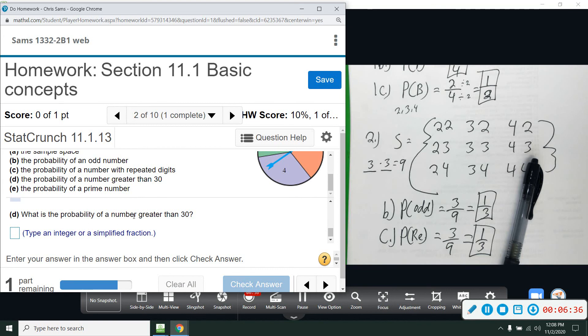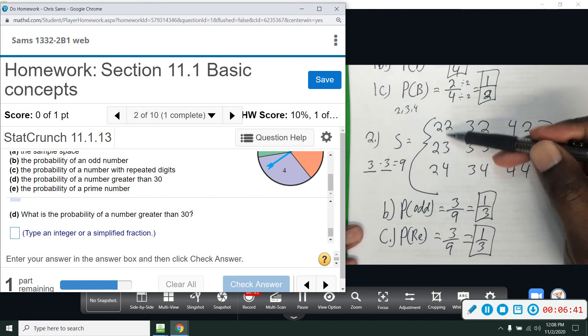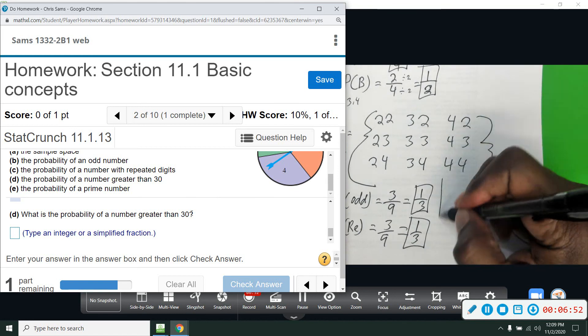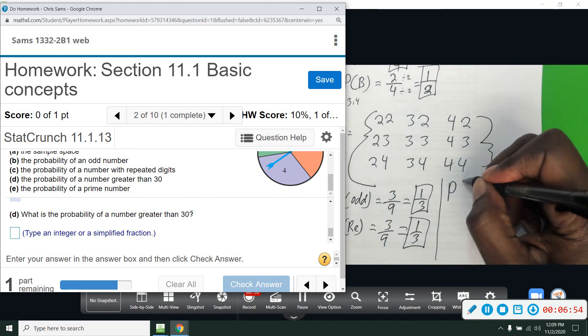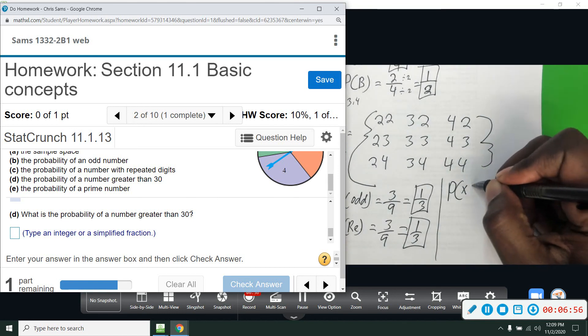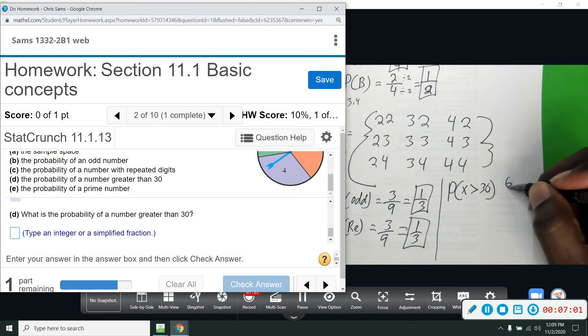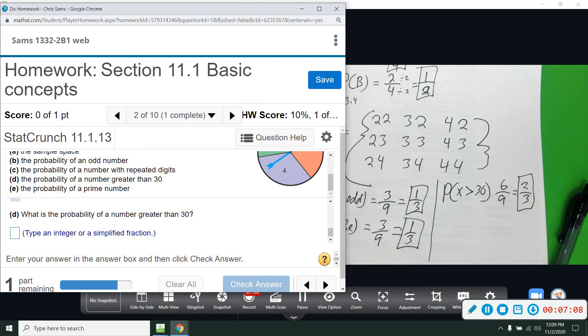D, what is the probability that the number is greater than 30? Okay, so numbers that are bigger than 30 - none of the 20s, but all of these 30s are bigger than 30, and all the 40s. So we have 6 of them out of 9. So we're going to say probability, X is greater than 30, X is our random variable number, and we have 6 out of 9, which will reduce to 2 out of 3. Divide both of those by 3, we get 2/3.